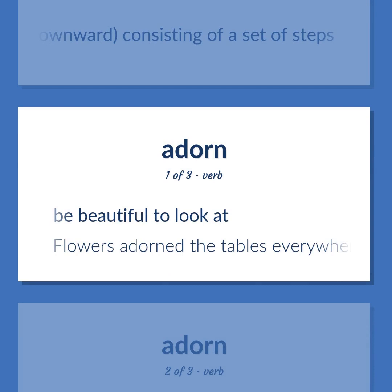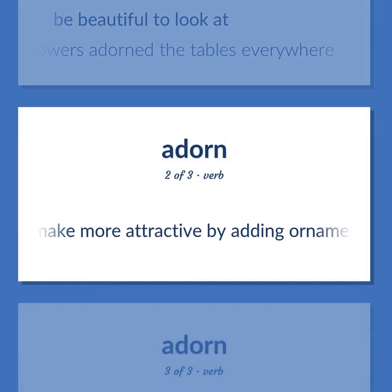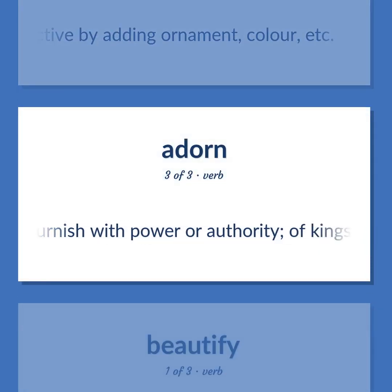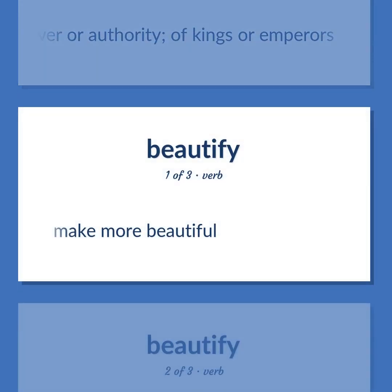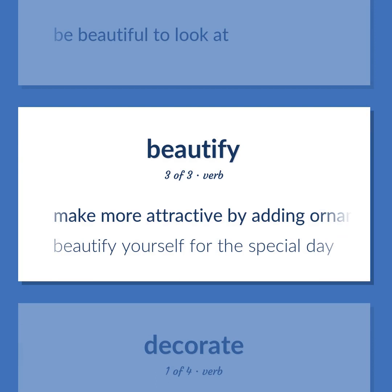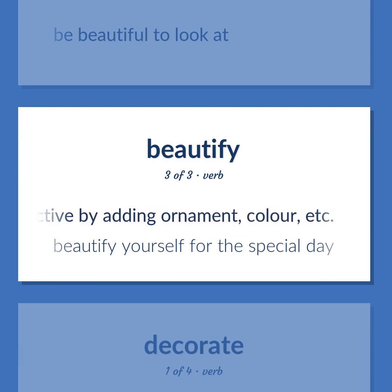Adorn: Be beautiful to look at — flowers adorn the tables everywhere. Make more attractive by adding ornament, color, etc. Furnish with power or authority, of kings or emperors. Make more beautiful. Beautify yourself for the special day.